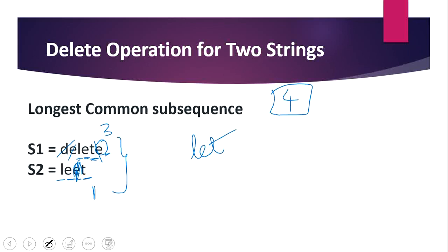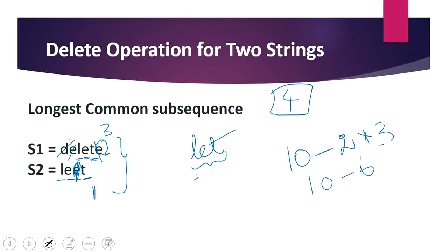As per our formula, the total length of both words is 10. We subtract twice the length of the common subsequence. The common subsequence present in both words has length 3. So 2 times 3 is 6, and 10 minus 6 equals 4. That is our output.